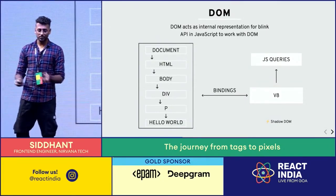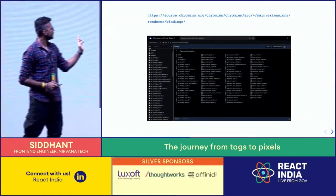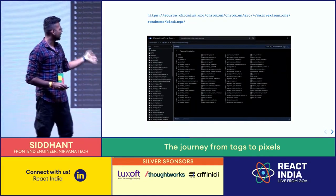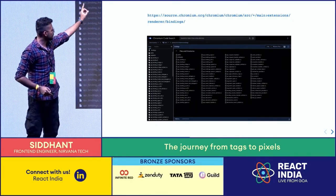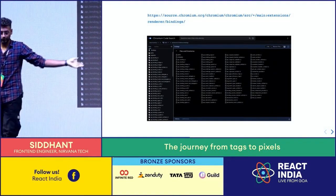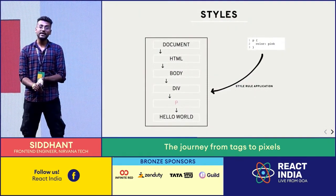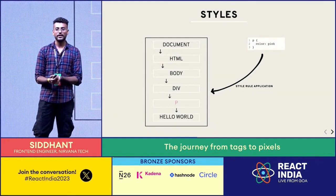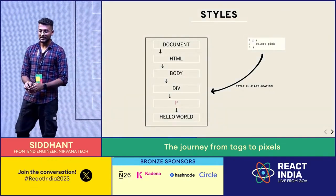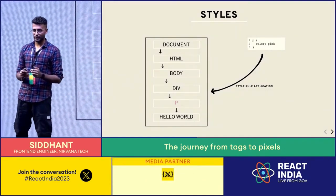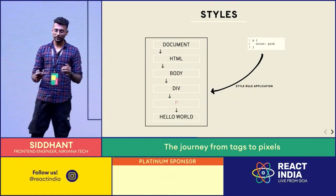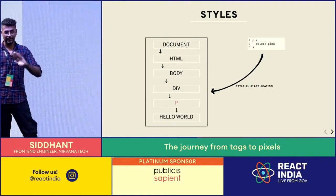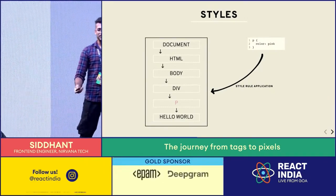V8 does this trickery called bindings - it provides methods over the C++ DOM that you can directly access using JS queries. For example you write something like appendChild and it adds a node to the DOM. It provides a lot of methods over your normal tree data structure through bindings. The code for bindings is actually simple to understand. Now we have a DOM tree - Document Object Model. The second part of the content: styles are loaded. We have to apply the styles because whenever HTML is loaded, styles can be loaded directly or from a CDN.